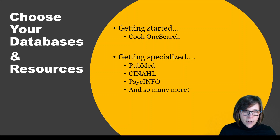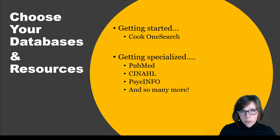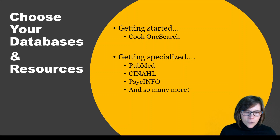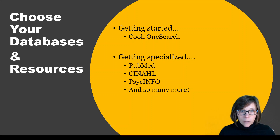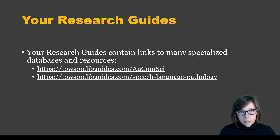Choose your databases and resources. After background research with scholarly encyclopedias, you might get started in Cook One Search to see what's been written, then get more specialized. Databases like PubMed, which contains Medline from the U.S. National Library of Medicine; CINAHL, a nursing and allied health literature database; and PsycINFO from the American Psychological Association, focused on psychological and psychiatric literature. Your research guides — both audiology and speech language pathology guides — have a databases and resources section with links to broad interdisciplinary and specialized databases.